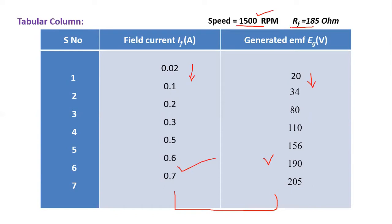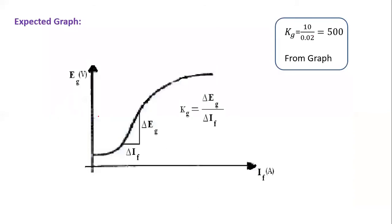The generator field winding resistance is measured using a multimeter and found to be 185 ohms. Draw a graph of generated EMF versus field current; from the slope of this curve, identify the generated EMF constant KG. Taking the slope as 10 / 0.02, the generated EMF constant KG is found to be 500.